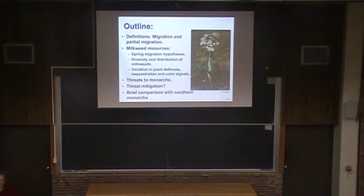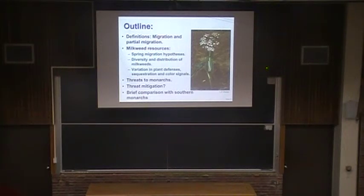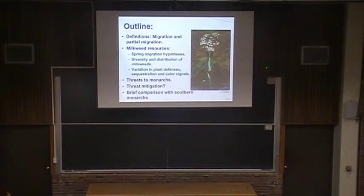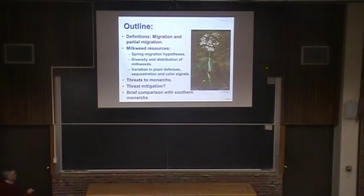The butterflies are brightly colored — it looks like they're wearing bright striped pyjamas. This is a warning to natural enemies, predators and parasites, that they're toxic. This is what I mean by sequestration: they sequester chemical defenses from their host plants and use them in their own defense against natural enemies. I'm going to talk about the nature of the color of monarch butterflies. Then I'll shift to looking at threats to monarchs, mitigation of those threats, and if time permits, compare monarchs in North America with those in South America.